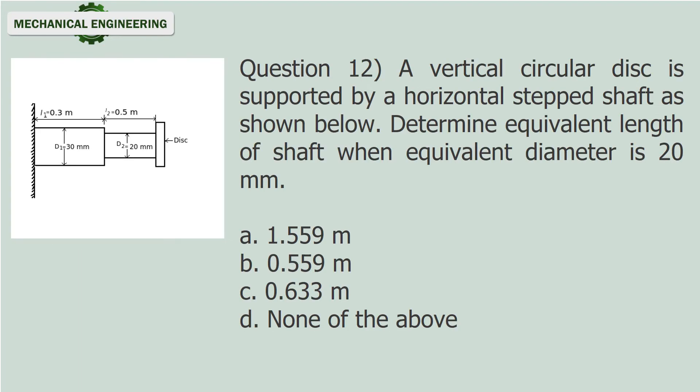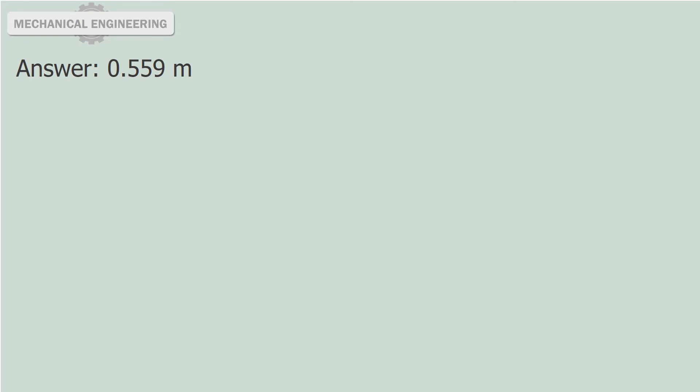Question 12: A vertical circular disc is supported by a horizontal stepped shaft as shown below. Determine equivalent length of shaft when equivalent diameter is 20 mm. a. 1.559 m. b. 0.559 m. c. 0.633 m. d. None of the above. Answer: 0.559 m.